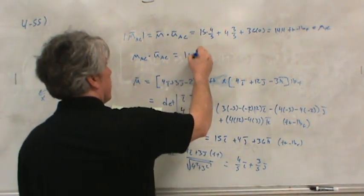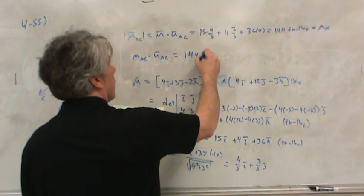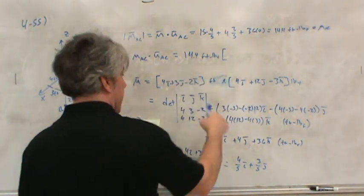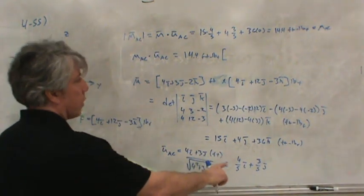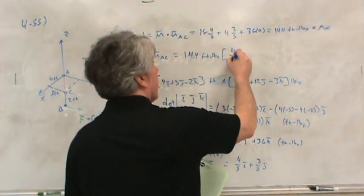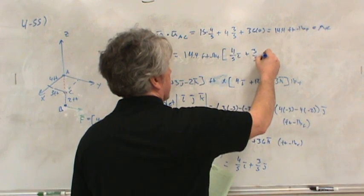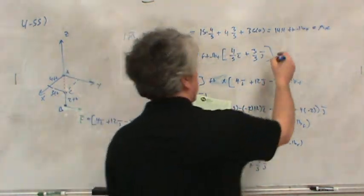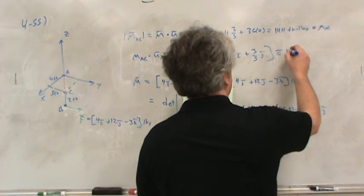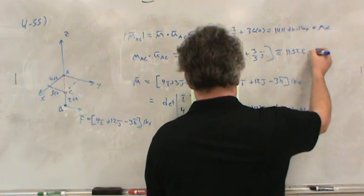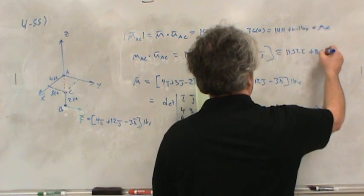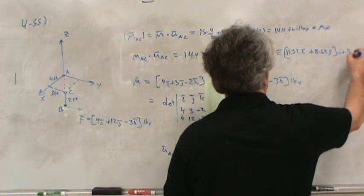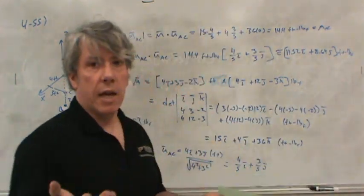So, we need to take the magnitude, 14.4 foot pounds force, and multiply it by the unit vector, which we already used before, but we can use it again. Again, 4 fifths i plus 3 fifths j. And so, this comes out to about, I think I had to round this off, 11.52i plus 8.64j. And, of course, it still has the same units of foot pounds force. That's feet times pounds force.